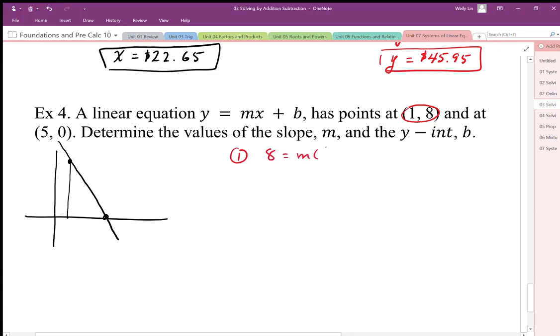to generate this equation, m plus b equals 8. And as long as I have another relationship, I can solve this as a system.